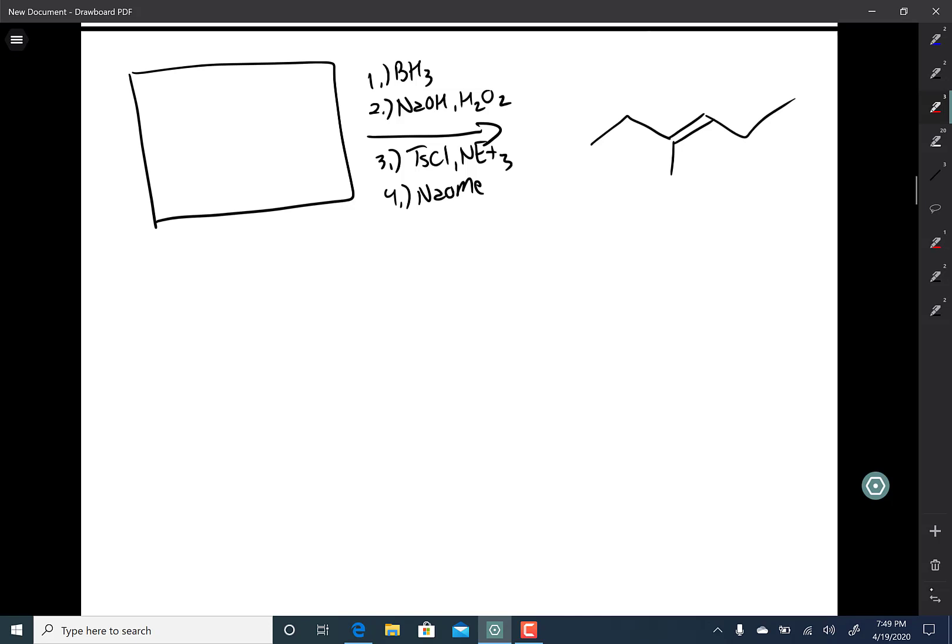Okay, for this problem we have an unknown starting material and you react with hydroboration followed by tosyl chloride followed by sodium methoxide, and that gives you that alkene product. We're trying to figure out what the starting material is.